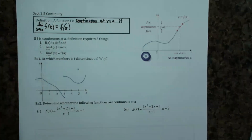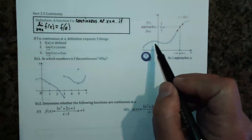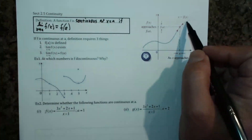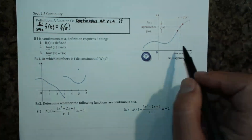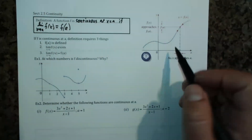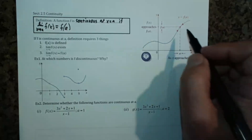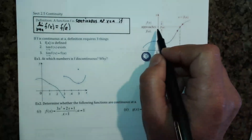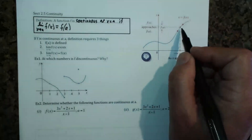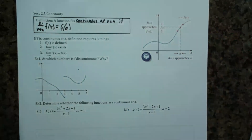Basically, a function is continuous when its graph is a single unbroken curve. So if you see the graph kind of break up at some point, or you have strange dots above or below, then we have discontinuity. We can see that our limit for this function as x approaches a from both directions is also F(a), so at this point the function is continuous.